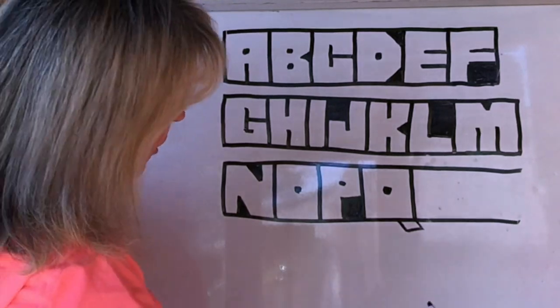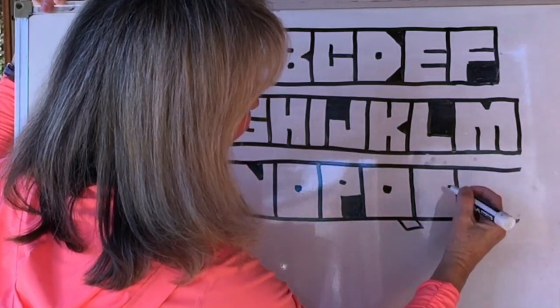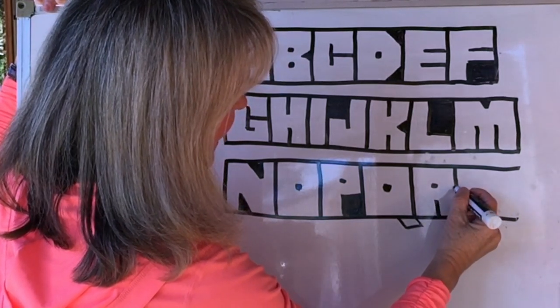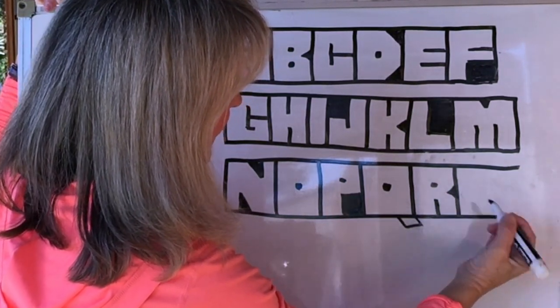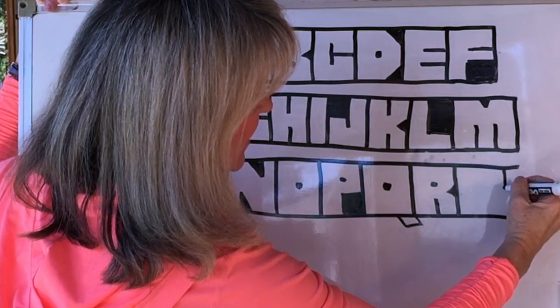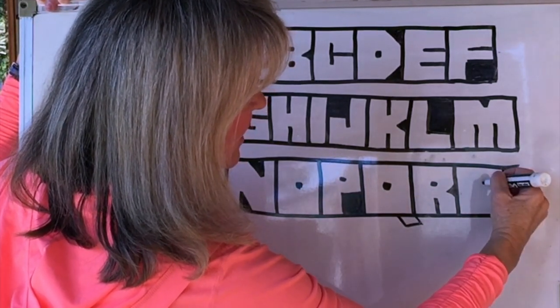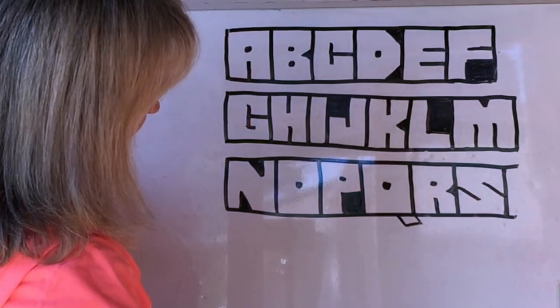And then we've got R and it starts like an A and then you do a little triangle. And now S is also a bit tricky. It's just two slanted lines like that.